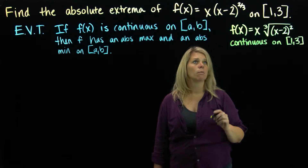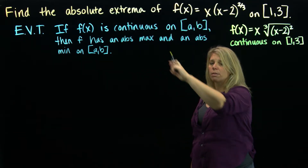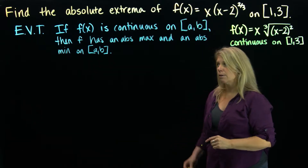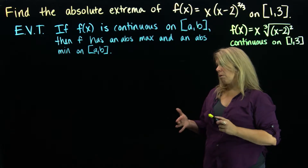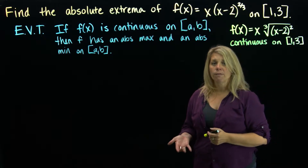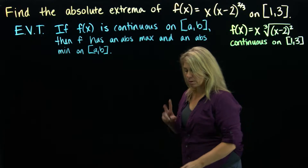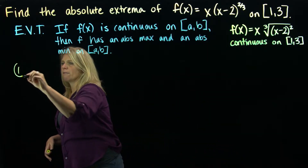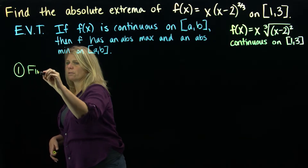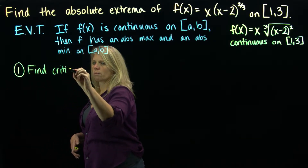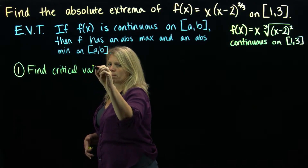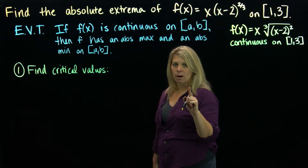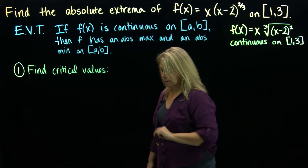The Extreme Value Theorem guarantees that I will have both an absolute maximum and an absolute minimum for the function outputs on this interval. There are two main steps to these problems. The first step is to find the critical values — those come from looking at where the derivative is 0 or does not exist on this interval.